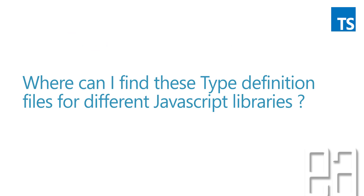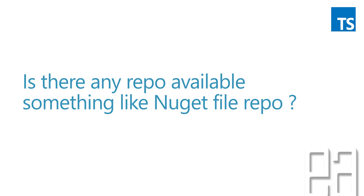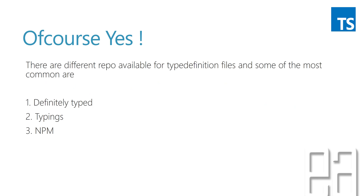So where can I find these type definition files for different JavaScript libraries? Is there any repo available, something like a NuGet file repo? Of course yes — there are many repositories available for type definition files, and some of the most common are DefinitelyTyped, Typings, and npm. These are the places where you can get type definitions for the most popular JavaScript libraries and frameworks. We're going to discuss them briefly since we'll be making use of these in our next video.